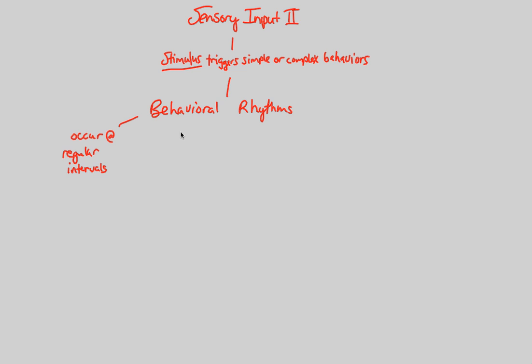We can understand behavioral rhythms by looking at circadian rhythms, a term you've probably heard many times before. We're really going to elaborate this and understand its purpose in the animal behavior sense of the term. Circadian rhythms are those rhythms that occur over the course of a day, over the course of one day. These occur all throughout the day.